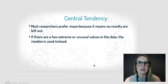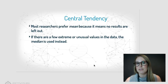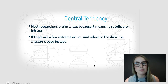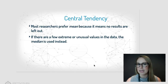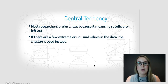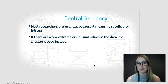Most researchers, particularly in psychological research, prefer the mean because it means no results are left out. However, if you have a class where most people got really high scores but one student who missed six weeks scored really badly, that would bring the mean down. So when there are outliers — extreme or unusual values in the data — the median is used instead.